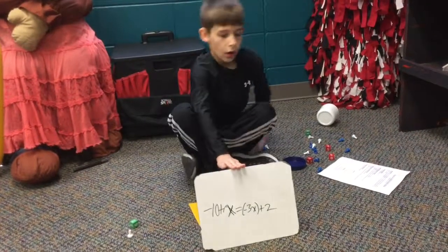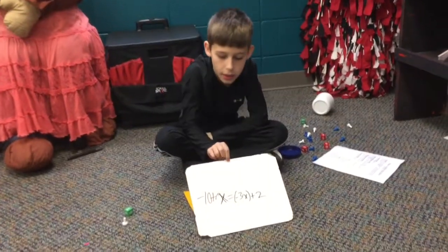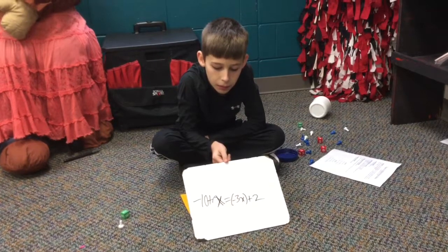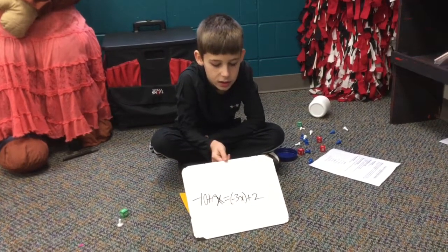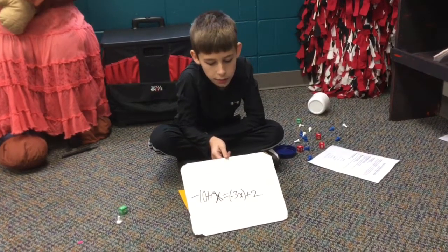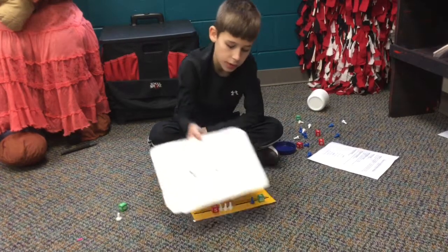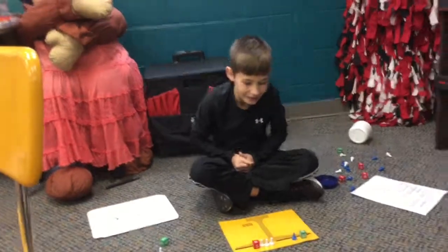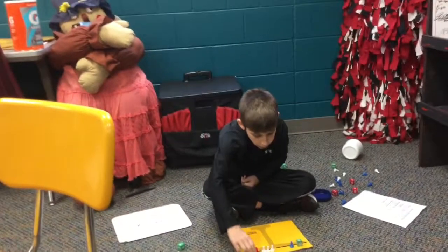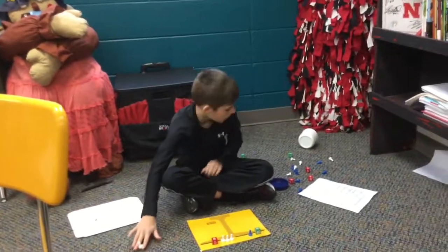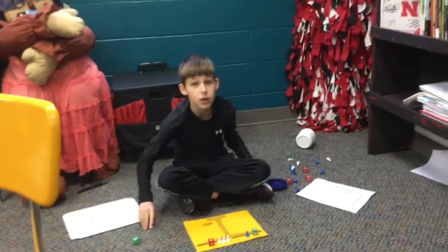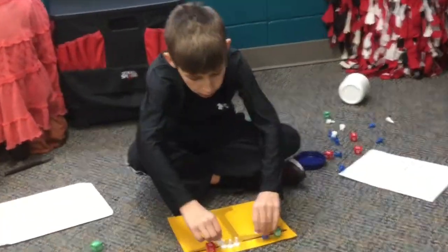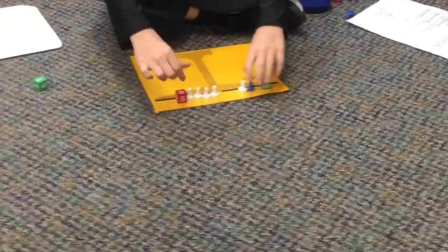For our second problem, we have negative 10 plus x equals negative 3x plus 2. I have the problem set up right here. The very first move we're going to do is make a pair of zero — we have a white pawn on each side, and then we take away that pair of zero.